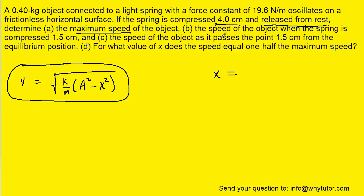In Part B they're telling us to calculate the speed when the spring is compressed by 1.5 centimeters. So that means that for x we're just going to plug in 1.5 times 10 to the minus 2. All the other values will be the same.